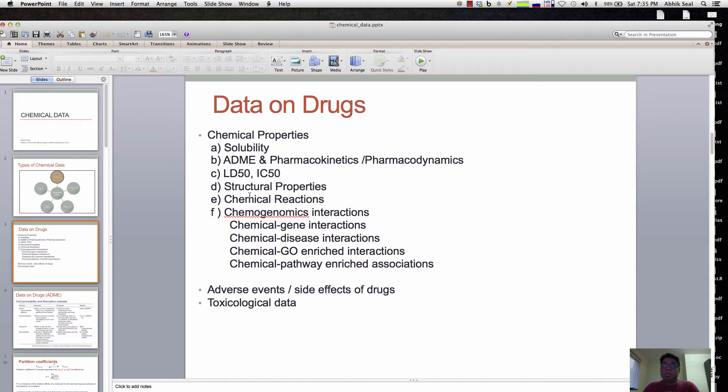There's also lots of data on chemogenomic interactions, like chemical-gene data, how the chemical interacts when the gene is expressing through microarray data analysis, and chemical-disease interactions through phenotypic screening where they extract tissue and put the chemical on to see if it shows activity against that disease.